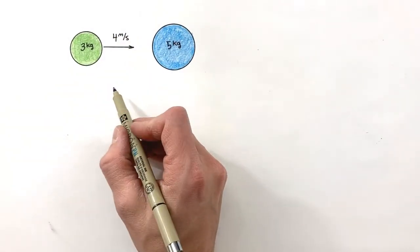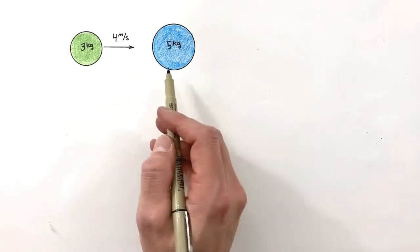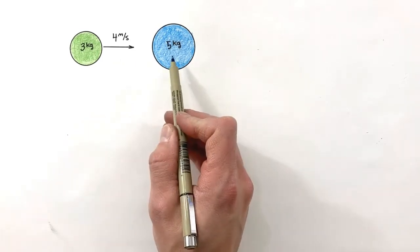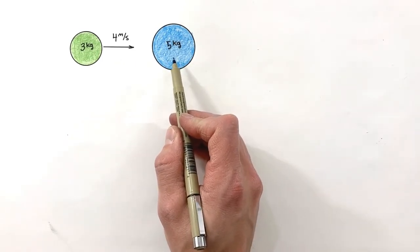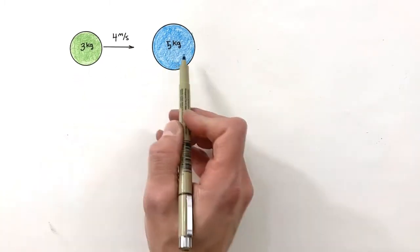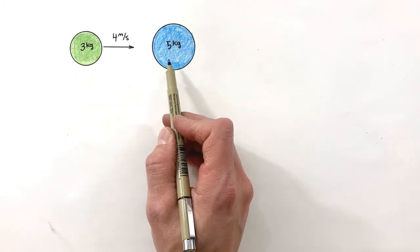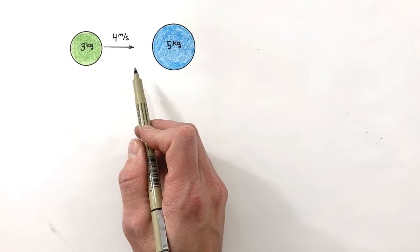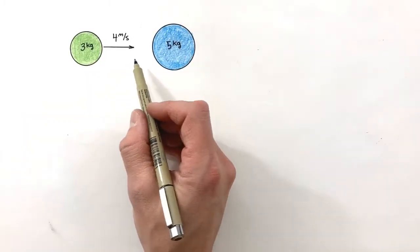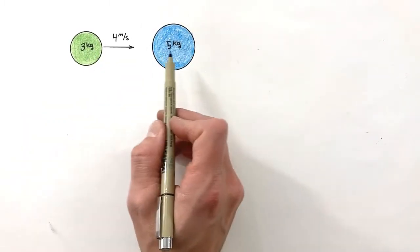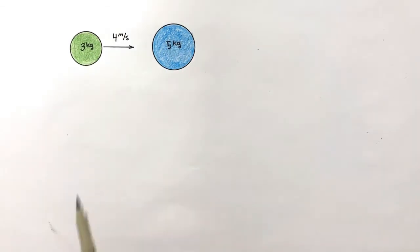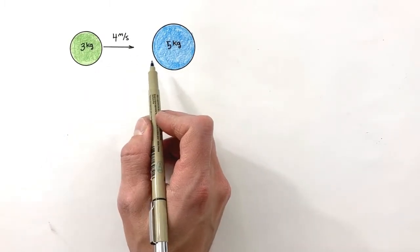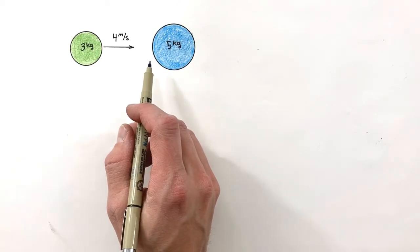Today we're going to talk about elastic collisions. We'll look at the simple situation of a three kilogram ball traveling with some initial velocity that's going to elastically collide with a five kilogram ball. When this elastic collision occurs, they're not going to stick together like they would in an inelastic collision — these two balls are going to bounce off each other. What we're going to solve for is the final velocity of each of these balls.